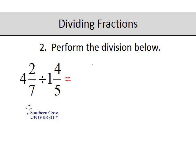4 sevenths are 28 and 2 makes 30 over 7. Divide by 1 times 5 is 5 and 4 is 9 over 5, and that will become 30 over 7 multiplied by the reciprocal of the second fraction which is 5 ninths.